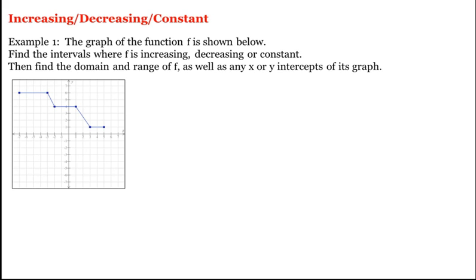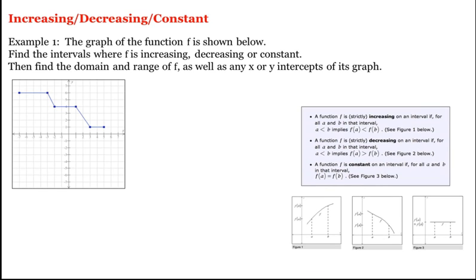A function f is said to be increasing, or strictly increasing, on an interval if for all a and b in that interval, where a is less than b, the y value at a — namely f(a) — is less than the y value at b — namely f(b). And what does that mean about the graph of the function? It means that the graph of the function is rising as we look from left to right.